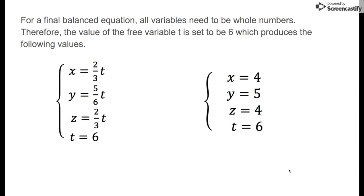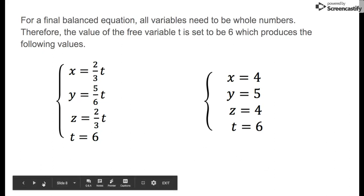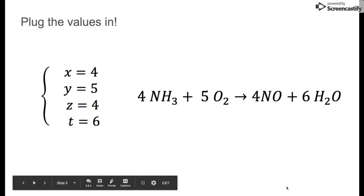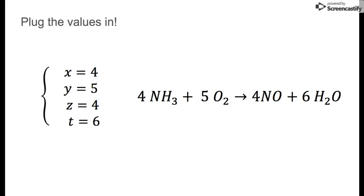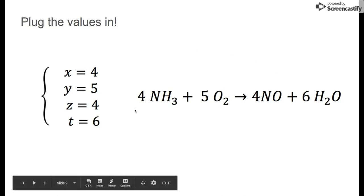We have found our coefficients, and now we plug them in to our chemical reaction: we have four ammonia molecules, five oxygen dioxide molecules, four nitrogen oxide molecules, and six water molecules. So using linear algebra and reduced row echelon form, we have solved for four variables and produced a balanced chemical equation.